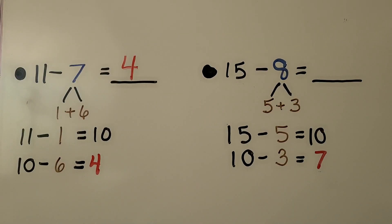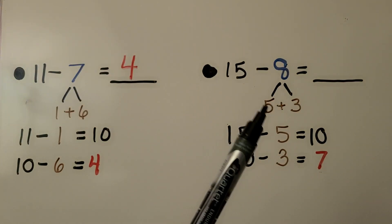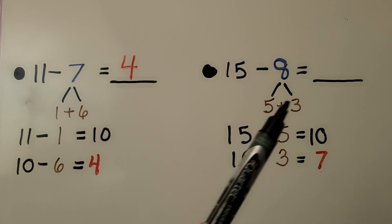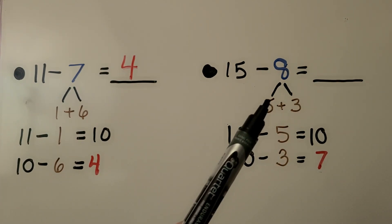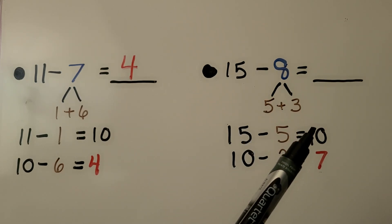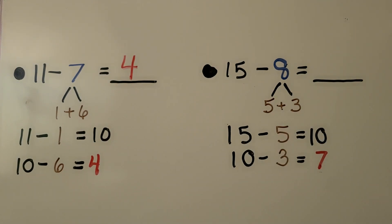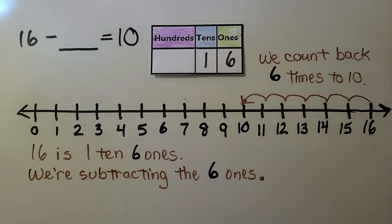Let's try 15 minus 8. We need to take 5 away from 15 in order to make it a 10. That means one of the numbers we break the subtrahend into needs to be a 5, and we'll also need a 3 to make an 8. We take the 5 away from 15 to make our 10, then take 3 away from 10. That gives us 7. So 15 minus 8 is equal to 7.